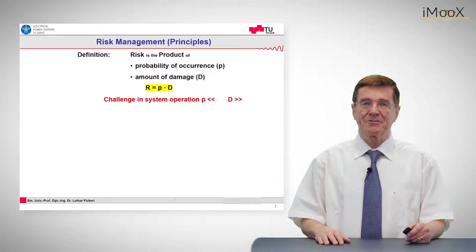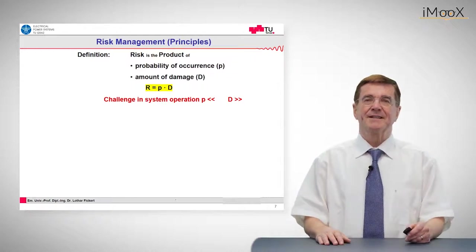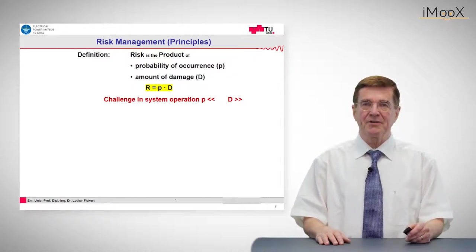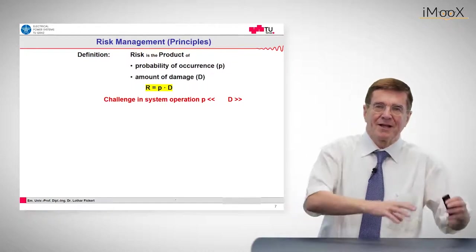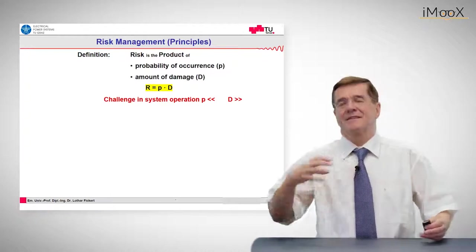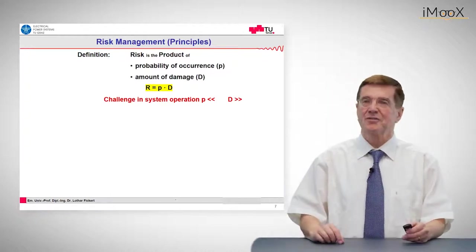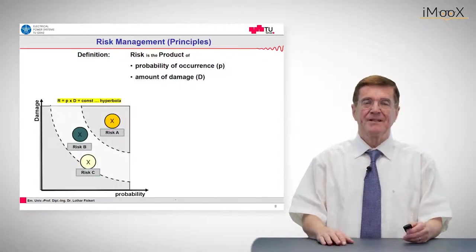The challenge in electrical power systems protection is that the probability is very low and the damage is very high. So we have multiplying something that is nearly zero with something that is nearly infinite, and that is challenging.